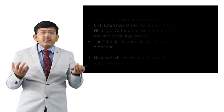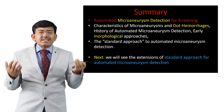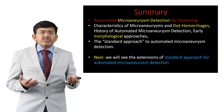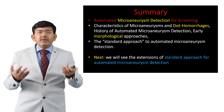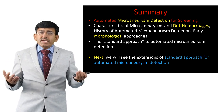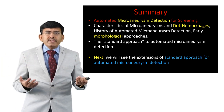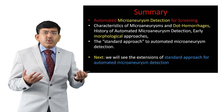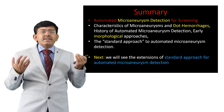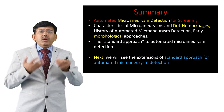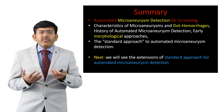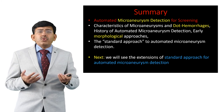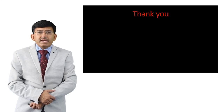With this, the automated microaneurism detection for screening module is concluded. We have begun by characterizing microaneurisms and dot hemorrhages, seen the history of automated microaneurism detection, early morphological approaches, and the standard approach to automated microaneurism detection. In the next module, we will see extensions of the standard approach for automation of microaneurism detection. Thank you.